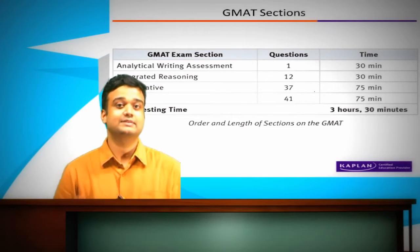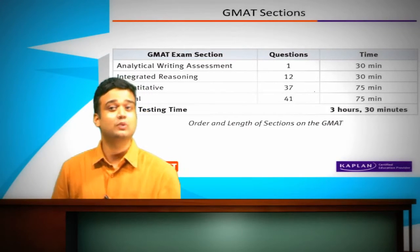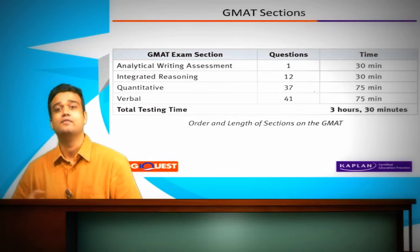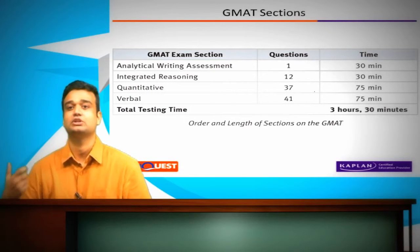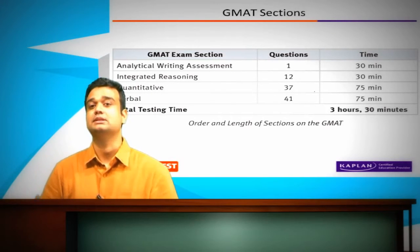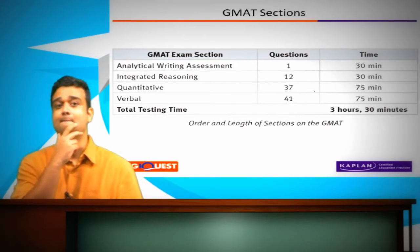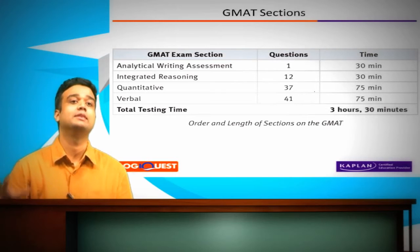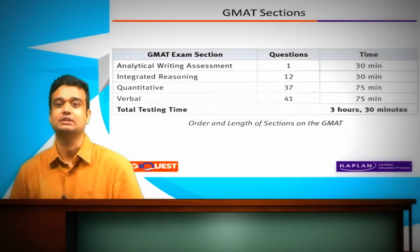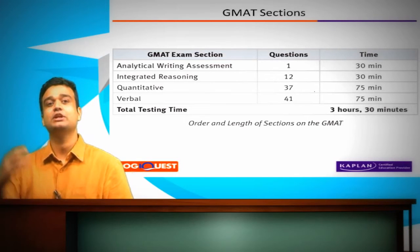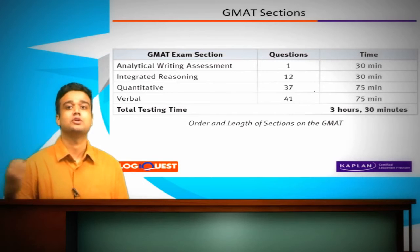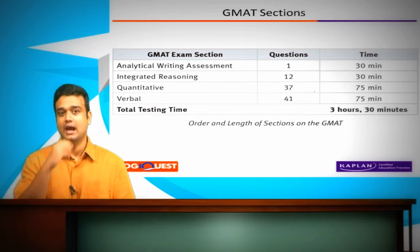The quantitative section has 37 questions and 75 minutes. Verbal has 41 questions and 75 minutes. Quant and verbal together constitute your score of 200 to 800.